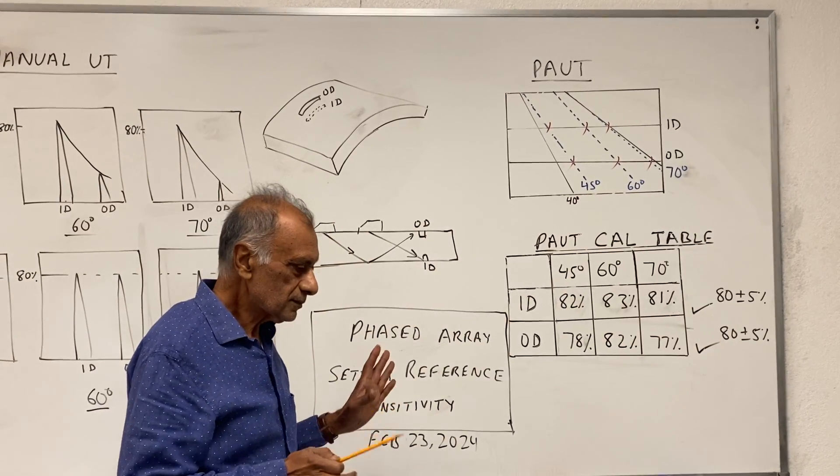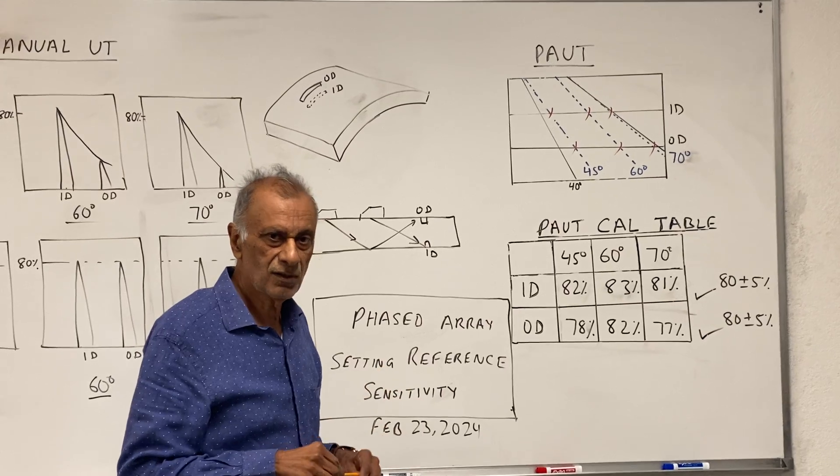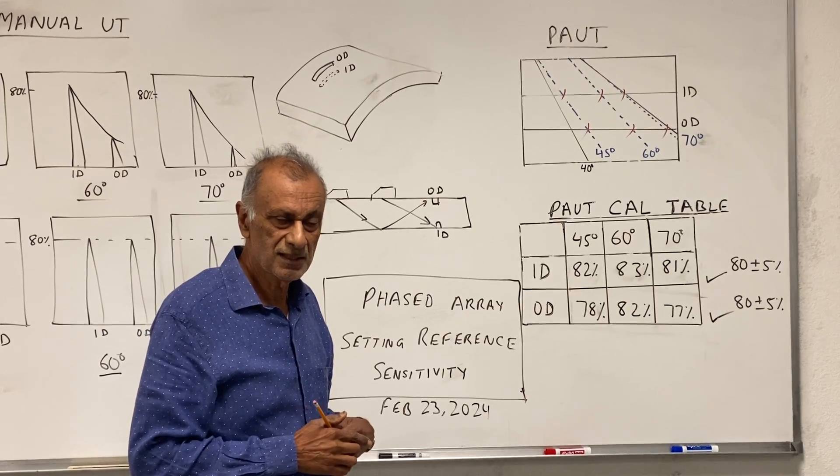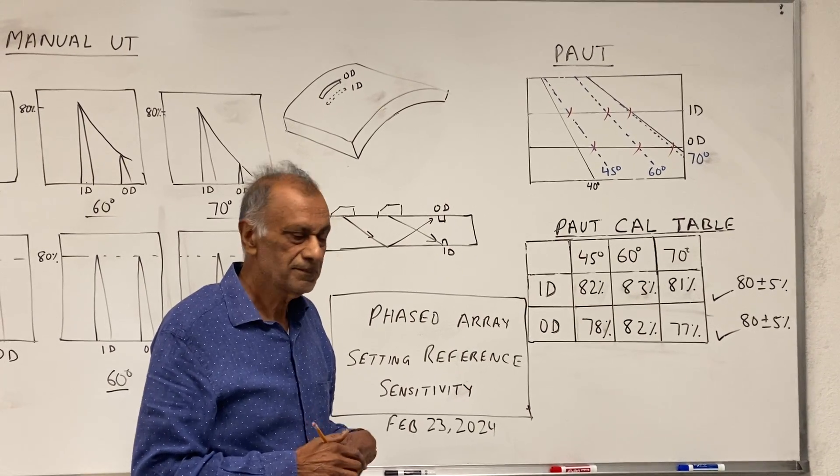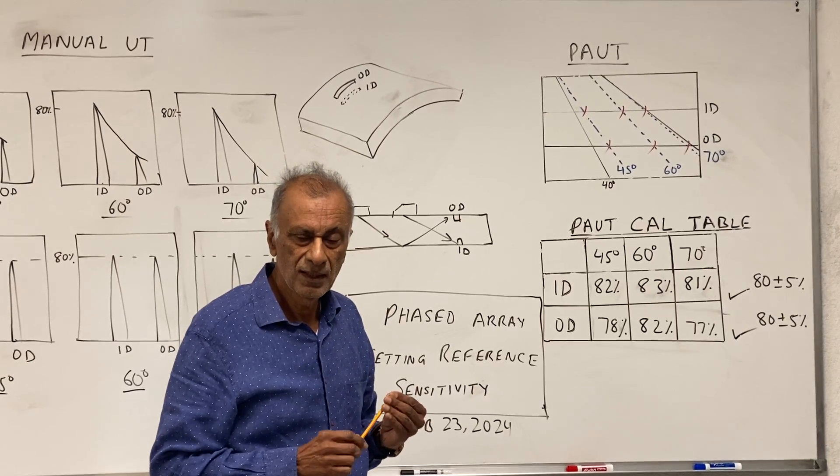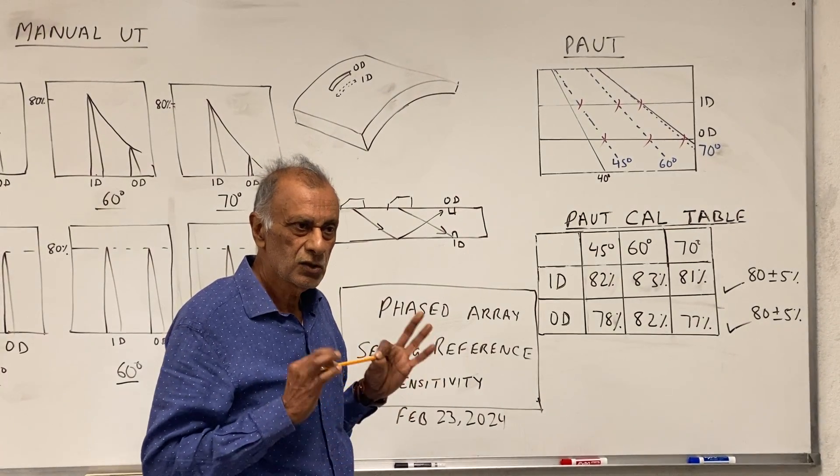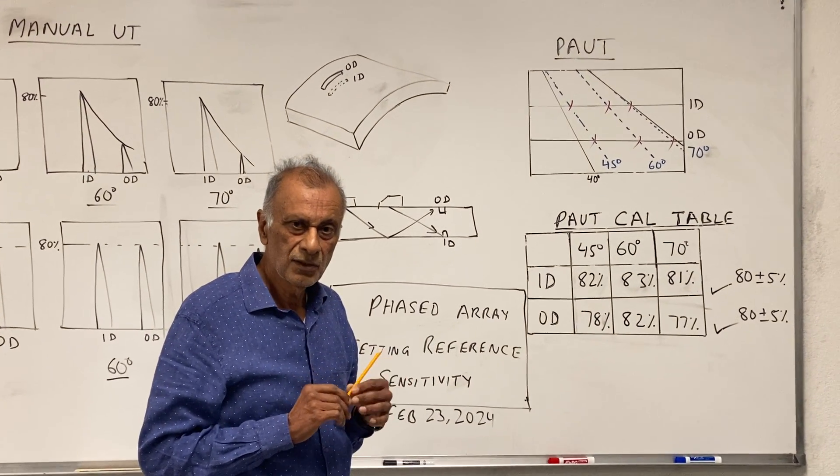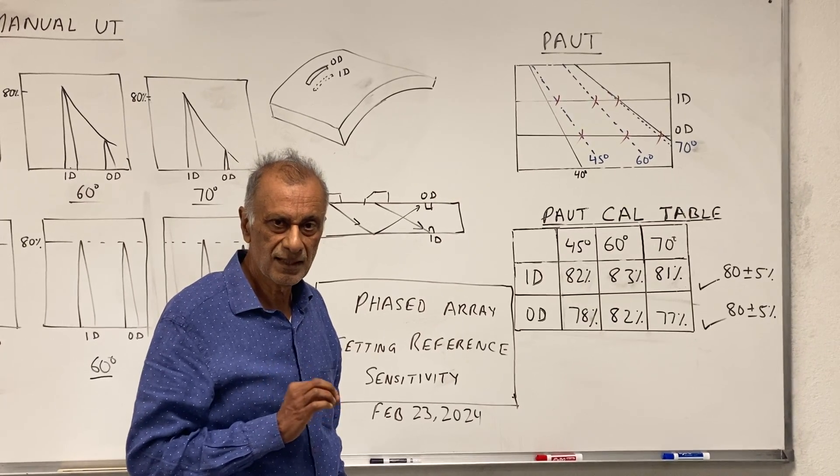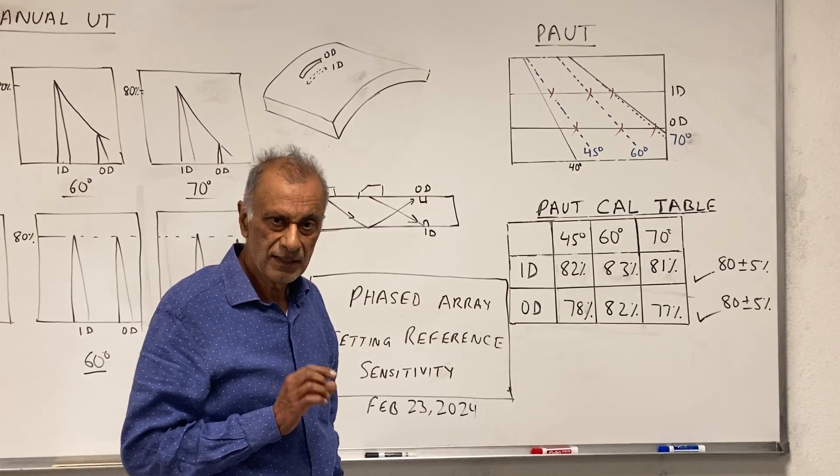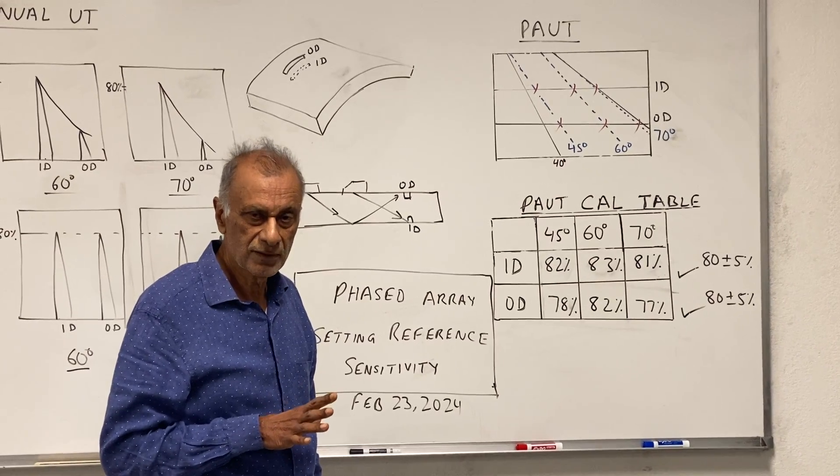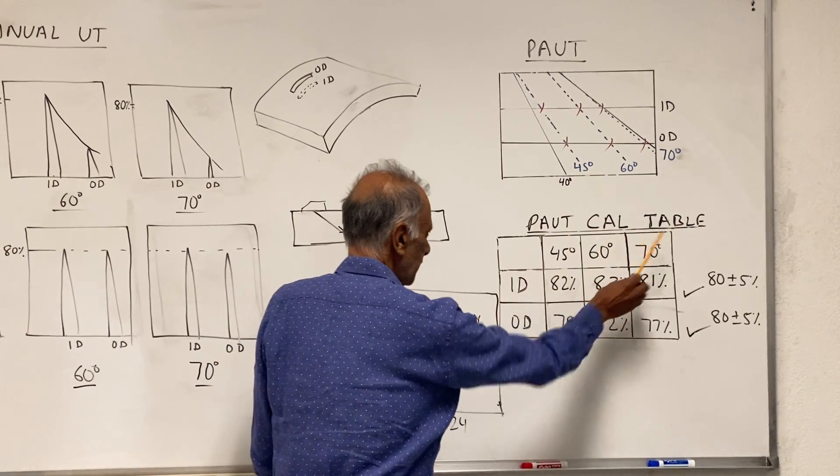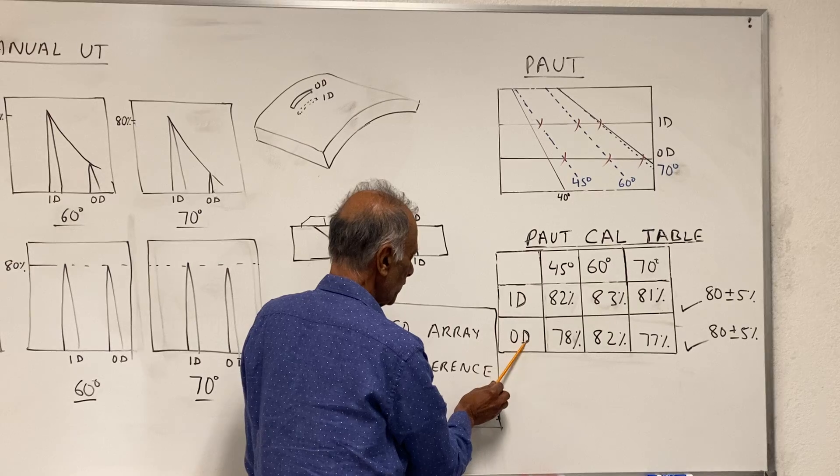Once we have that, then we have to fill up what's called the phased array calibration table, which many of the people who are doing this inspection do not even fill. They really don't know if they have done the calibration correctly or not. At the end of this setup, you have to verify and enter this data into the PAUT calibration data sheet to make sure it meets the code requirement.